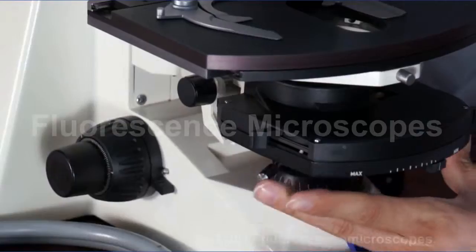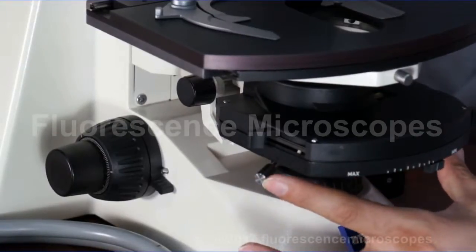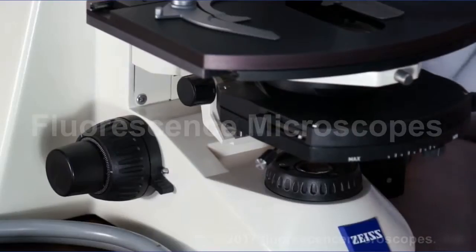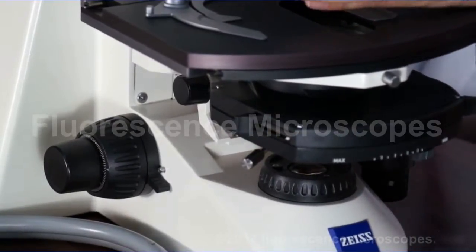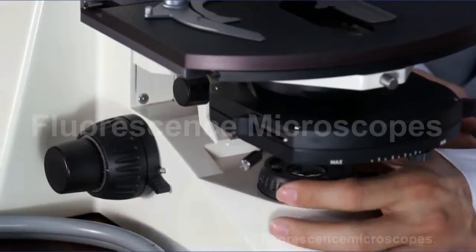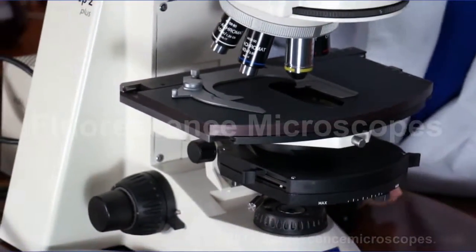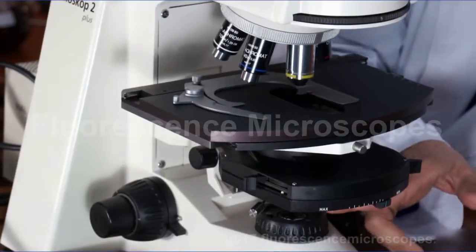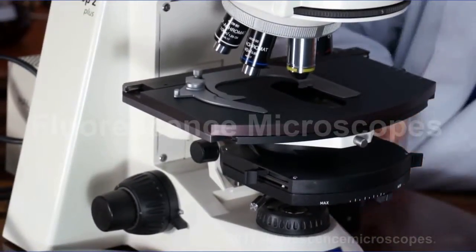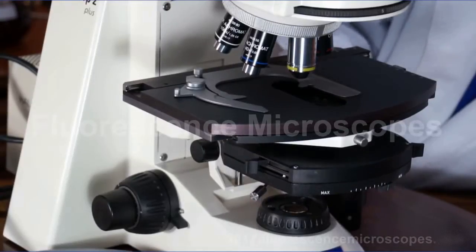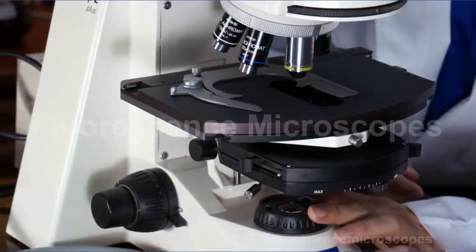It's got two centering knobs for the condenser. What you're going to want to do is turn it to about a 10 power objective. You're going to want to close down your luminous field diaphragm so that you can get this luminous field diaphragm in view, but focused. Raise or lower this condenser so that the luminous field diaphragm is in focus.